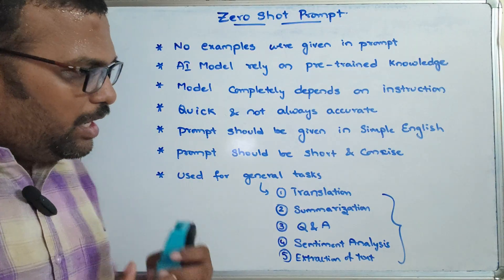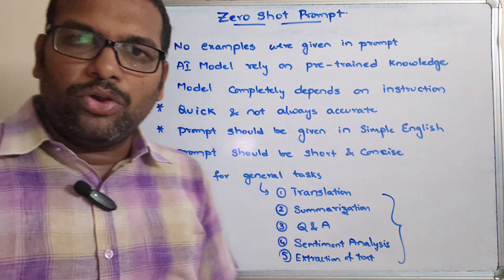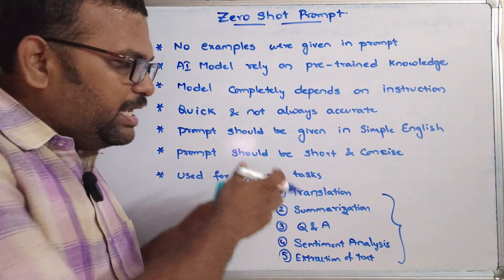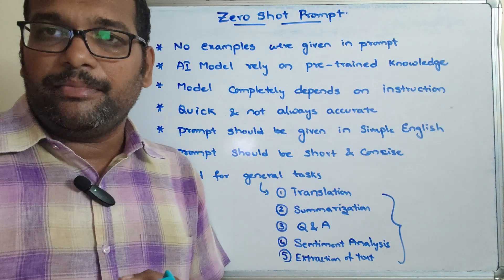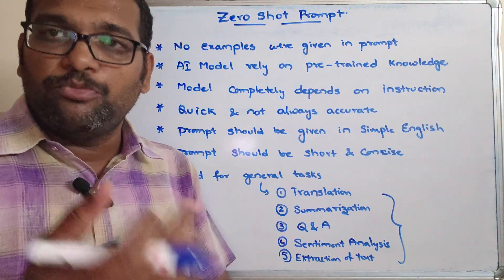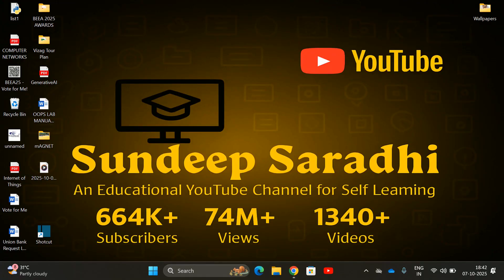Without delay, let us move on to the system. I will show you one example for each task so that you will understand in a perfect way. Just now we have seen what tasks we can do with zero-shot prompts, and now we will see them in execution.